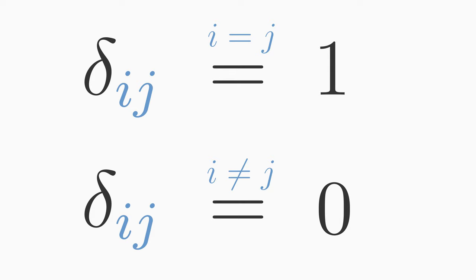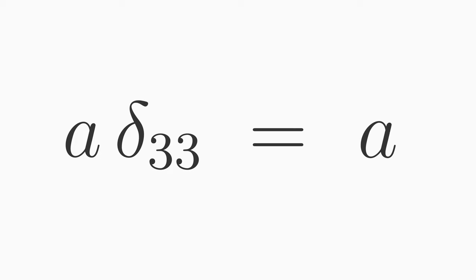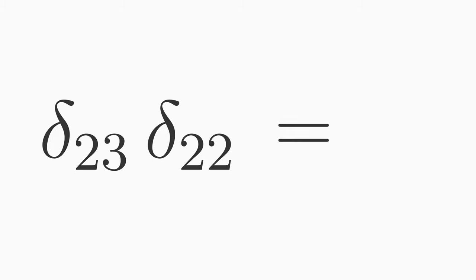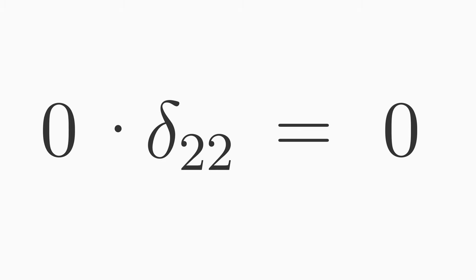Let's make some examples. Delta 1 1 is equal to 1 because the indices are equal. Delta 2 3 is 0 because the indices are not equal. A times delta 3 3 is equal to A because the indices are equal, so the Kronecker delta is 1. And delta 2 3 times delta 2 2 is equal to 0 because the first delta yields 0, and the second delta yields 1. But 0 times 1 is still 0.